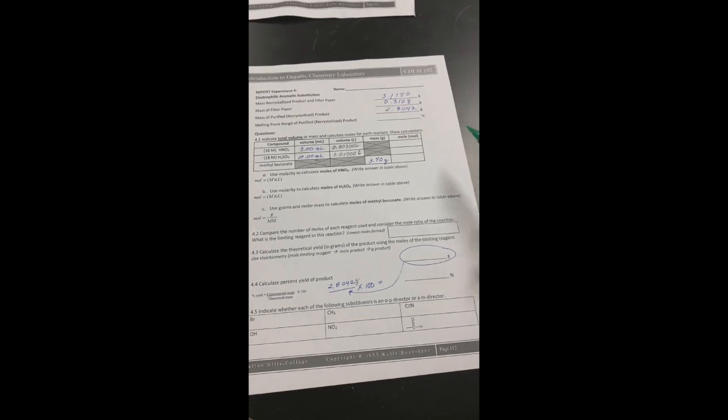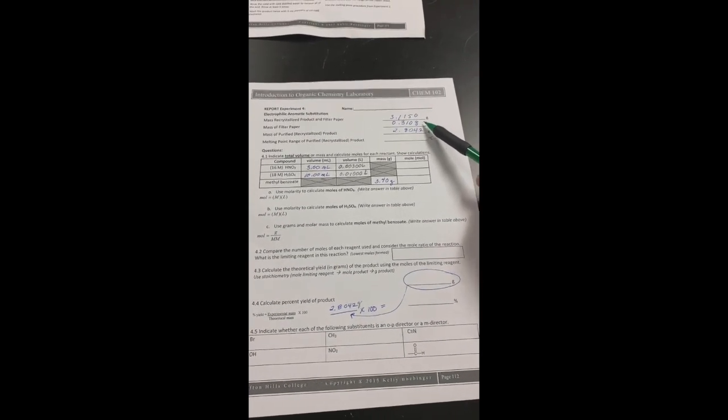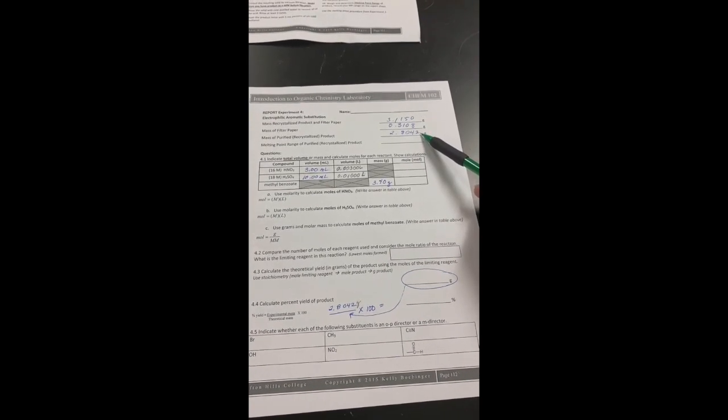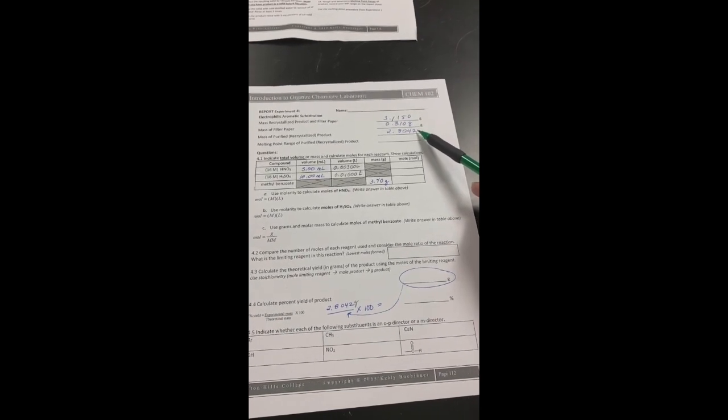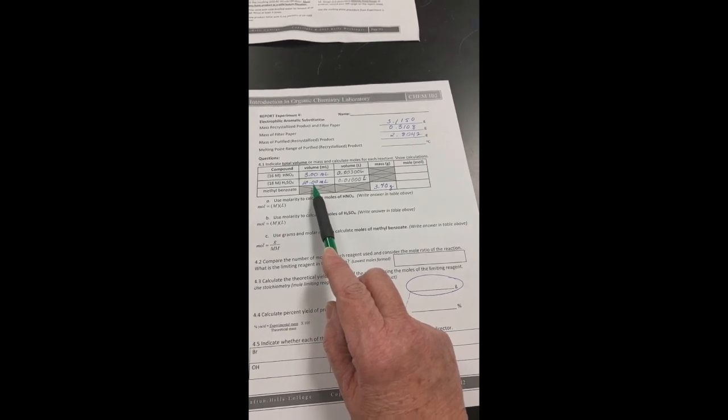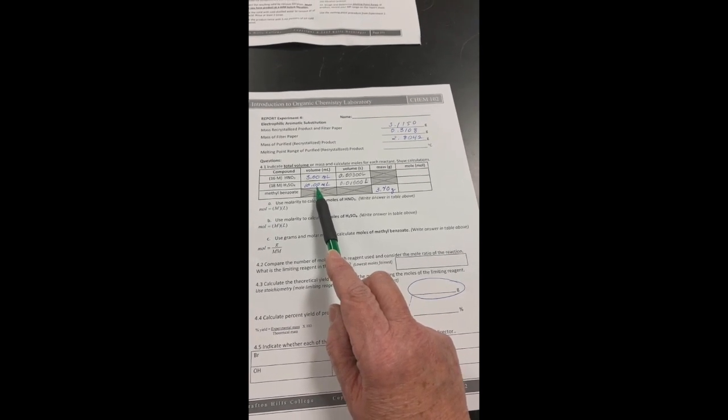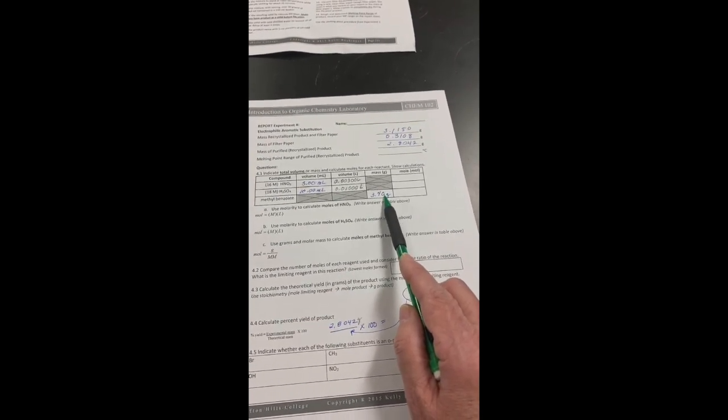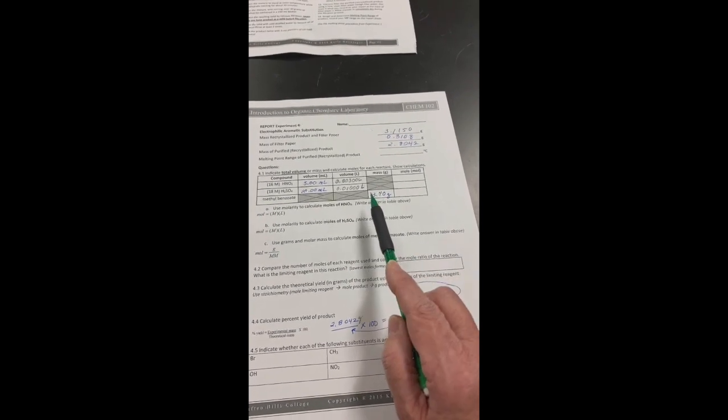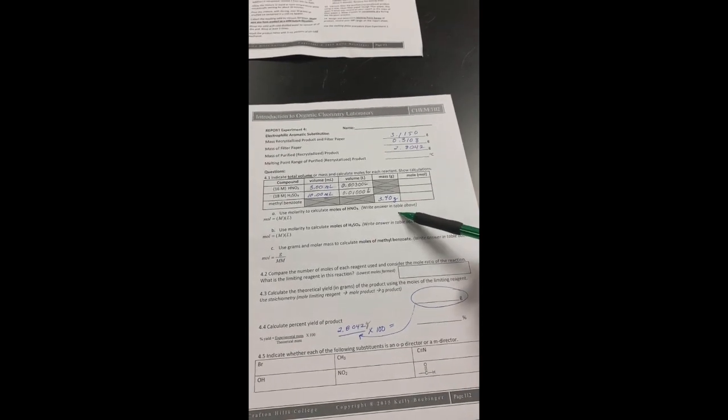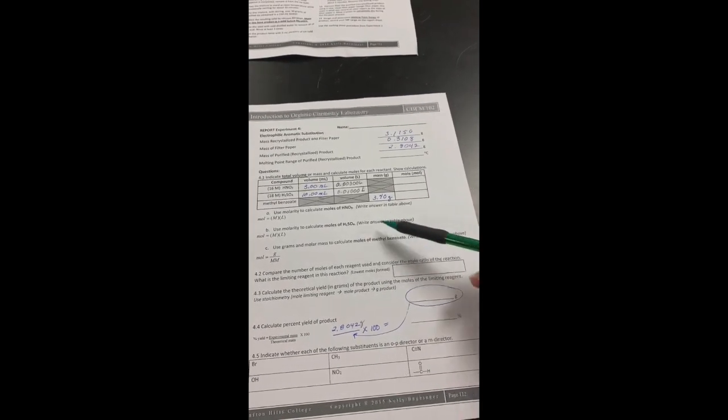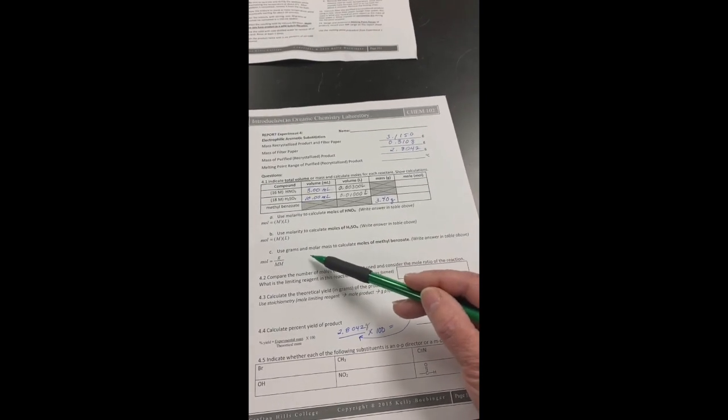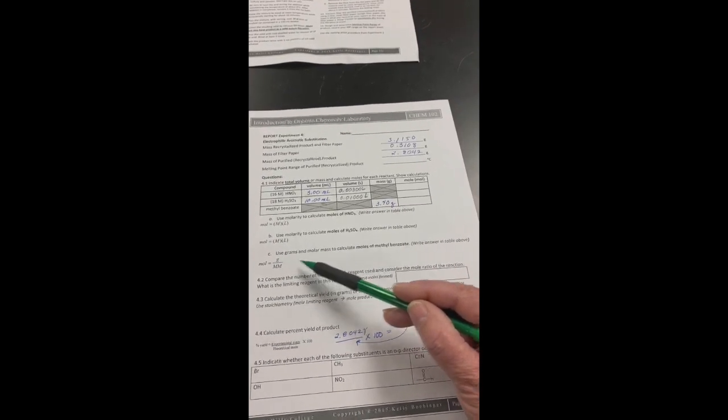For your report sheet, remember these first two numbers here came from an analytical balance. Those were experimental results. So we have a lot more sig figs we get to use here for the mass of purified product and that won't limit our sig figs too much because we actually have five of them there. Don't forget when you fill in the table, you actually used a total of 10 milliliters of sulfuric acid. It was two different steps. One time you did three mils, the other time was seven mils and converting those to liters. And the mass of the methyl benzoate is actually from the instructions. We measured the volume, but I gave you the mass. To calculate the moles here, you're going to calculate the moles of your nitric acid here. This is the formula, the moles of sulfuric acid here. And then because we have a mass, our methyl benzoate is going to be using this formula to figure out the moles.